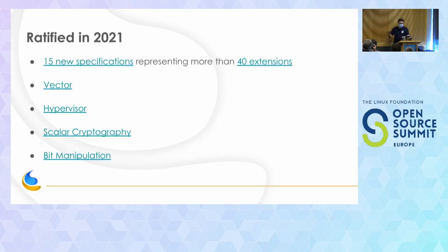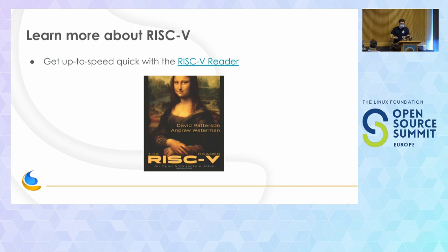At the end of 2021, we had 15 new specifications with 40 extensions. Some of the really interesting things were Vector — scalable vector instructions — Hypervisor, so we can do virtual machines, and also things to accelerate cryptography operations and bit manipulation. If you want to know more about the instruction set and standard extensions, this book is only about a hundred pages and it's available in several languages — it's called the RISC-V Reader.